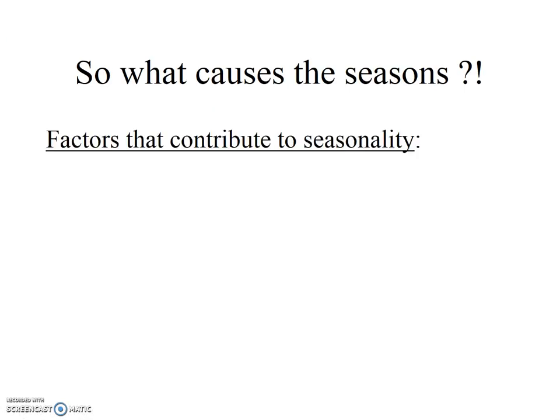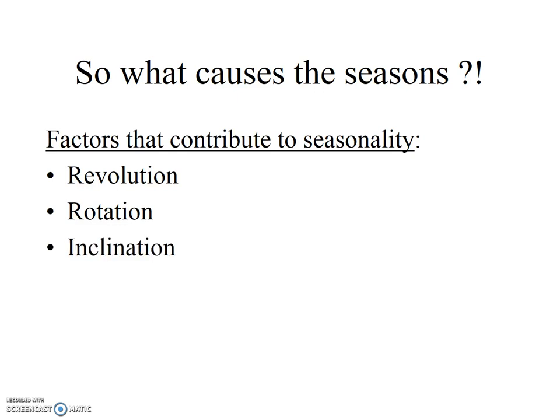So what causes the seasons? Well, during the year, the Sun angles and day length change due to the changing relationship between the Earth and the Sun. These changes result from a combination of four factors: the Earth's revolution around the Sun, the Earth's rotation on its axis, the constant tilt angle of 23.5 degrees of the Earth's axis relative to the plane of the ecliptic, and the polarity of the Earth's axis.